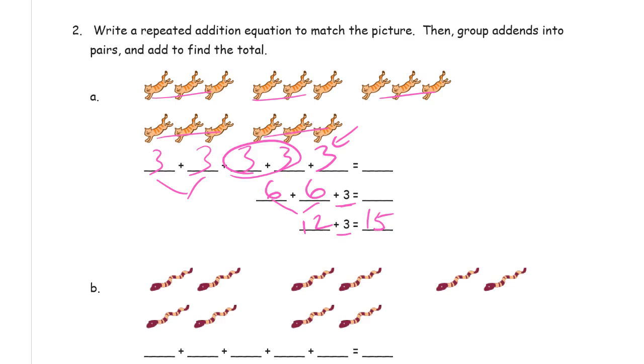So it means this whole thing, when it was just five threes right there, it was fifteen. And when it was two sixes and a three, it was fifteen. And when it's twelve plus three, it's still fifteen because it's the same five groups of three cats, no matter how you look at it.